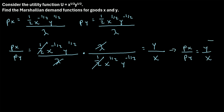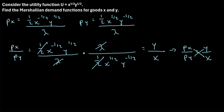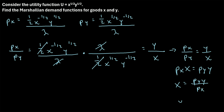Once we've simplified to p_x / p_y = y / x, it's straightforward to solve for x and y. Cross-multiplying, we find p_x times x equals p_y times y. So x equals p_y times y divided by p_x, and y equals p_x times x divided by p_y.